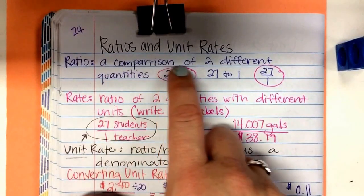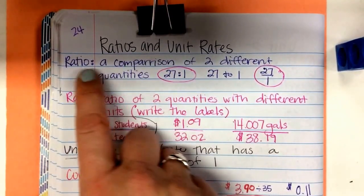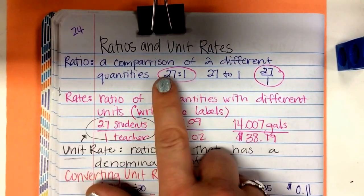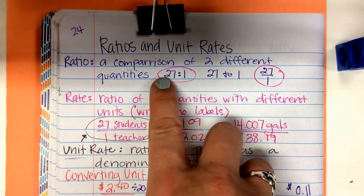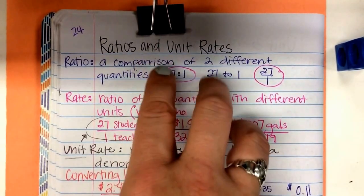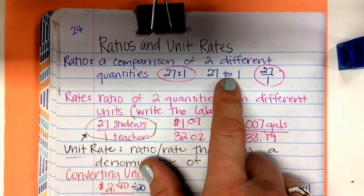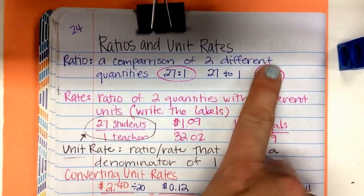Remember, a ratio is a comparison of two different quantities. So a ratio is just a number with a colon and another number. In this class, there was a 27 to 1 student-to-teacher ratio. 27 to 1. Or you can write it with a number 2 or as a fraction.